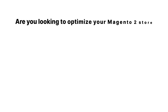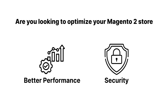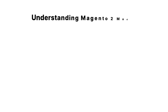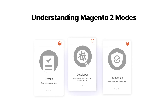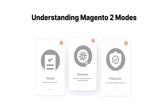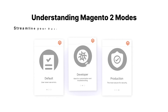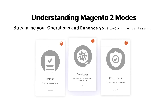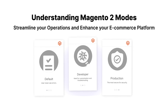Are you looking to optimize your Magento 2 store for better performance and security? Understanding Magento 2 modes — default, developer, and production — is key. Let's dive into how these modes can streamline your operations and enhance your e-commerce platform.